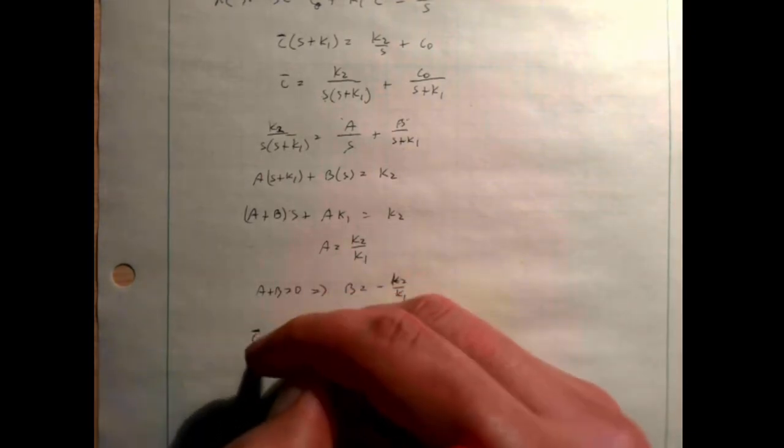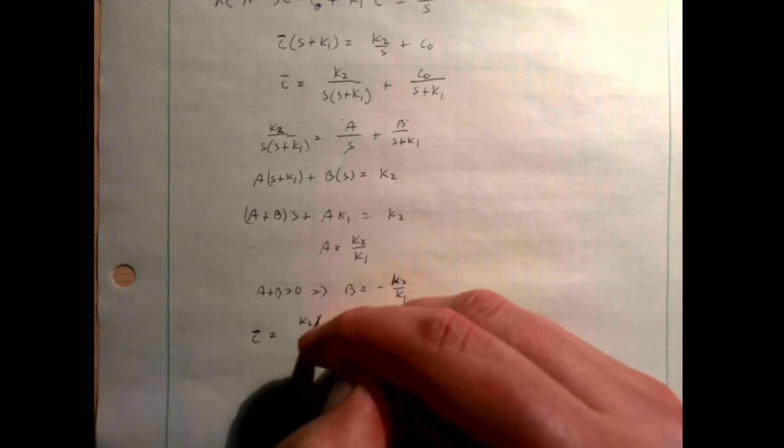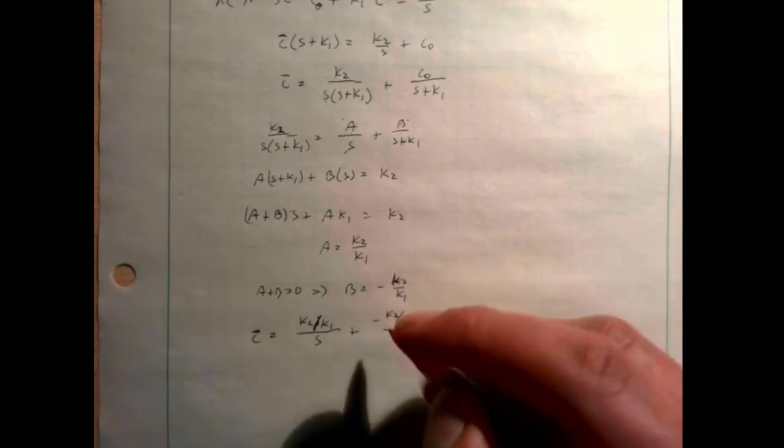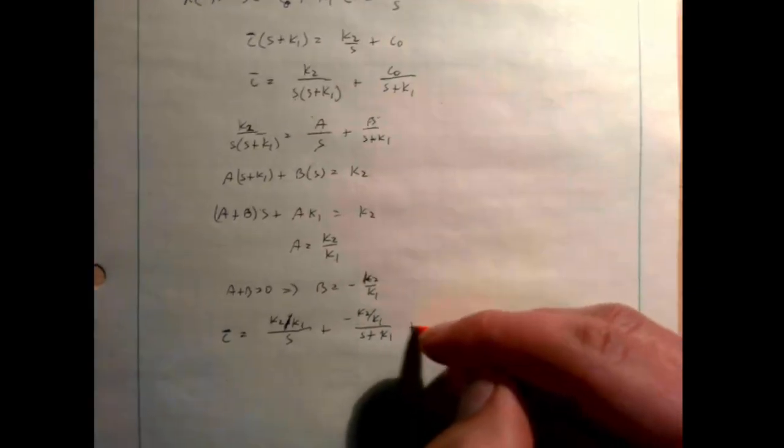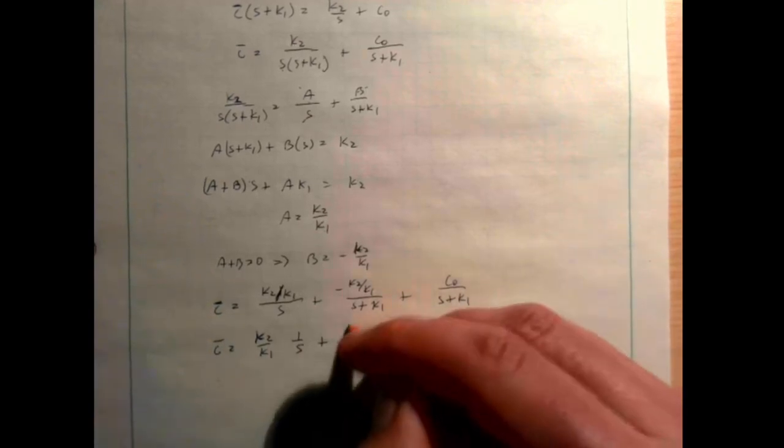Going back to our original equation, we can rewrite C-bar as: (K2/K1)/s + (−K2/K1)/(s+K1) + C0/(s+K1). We can combine the last two terms, giving C-bar = (K2/K1)·[1/s] + (C0 − K2/K1)·[1/(s+K1)]. K2/K1 and C0 are just constants, so they go along for the ride, leaving us with two terms we can look up in the table.